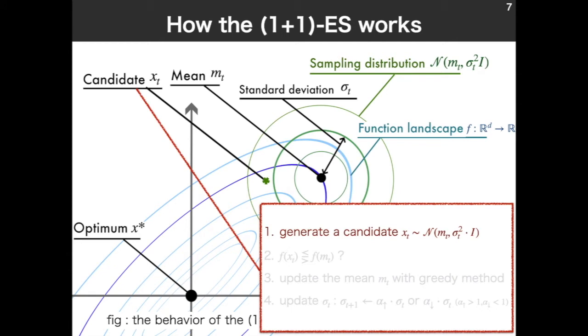Okay, first, the (1+1) evolution strategy generates a candidate x_t from this normal distribution, and compares the magnitude between x_t and m_t under f. And from this result, it updates the mean m with greedy methods. Namely, if f(x_t) is smaller than f(m_t), x_t is the next mean. Or, if f(m_t) is smaller than f(x_t), mean stays here.